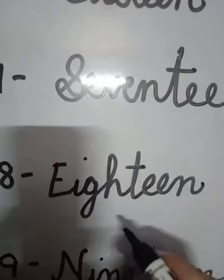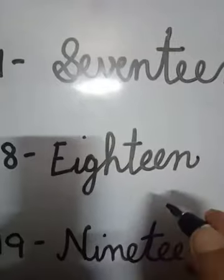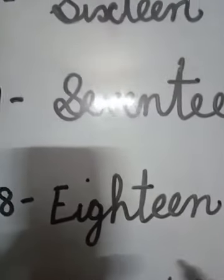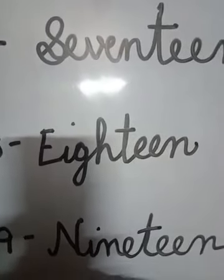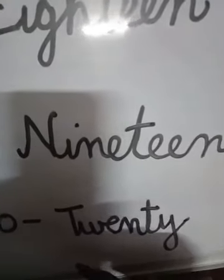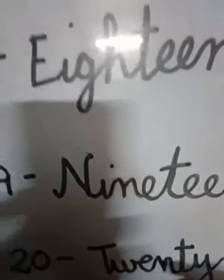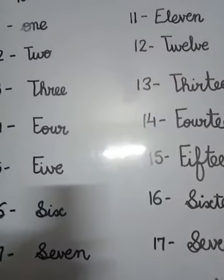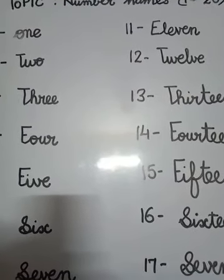Eighteen: E-I-G-H-T-E-E-N-18. Nineteen: N-I-N-E-T-E-E-N-19. Twenty: T-W-E-N-T-Y-20. So, read aloud with me and write again.